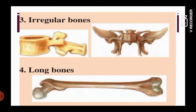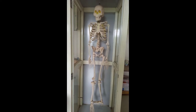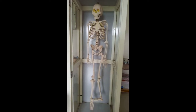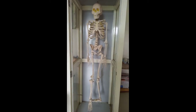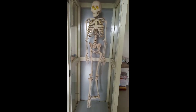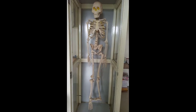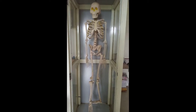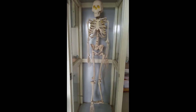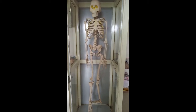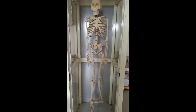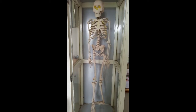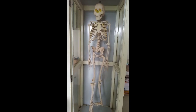Good morning, students. Today we are learning about the human skeletal system. Here you can see the human skeletal system — this is our own bone structure. You can see various parts: the skull, rib cage, bones of the hands, bones of the legs, and the pelvic girdle. These are the various bones present in our own body, which we are going to study.